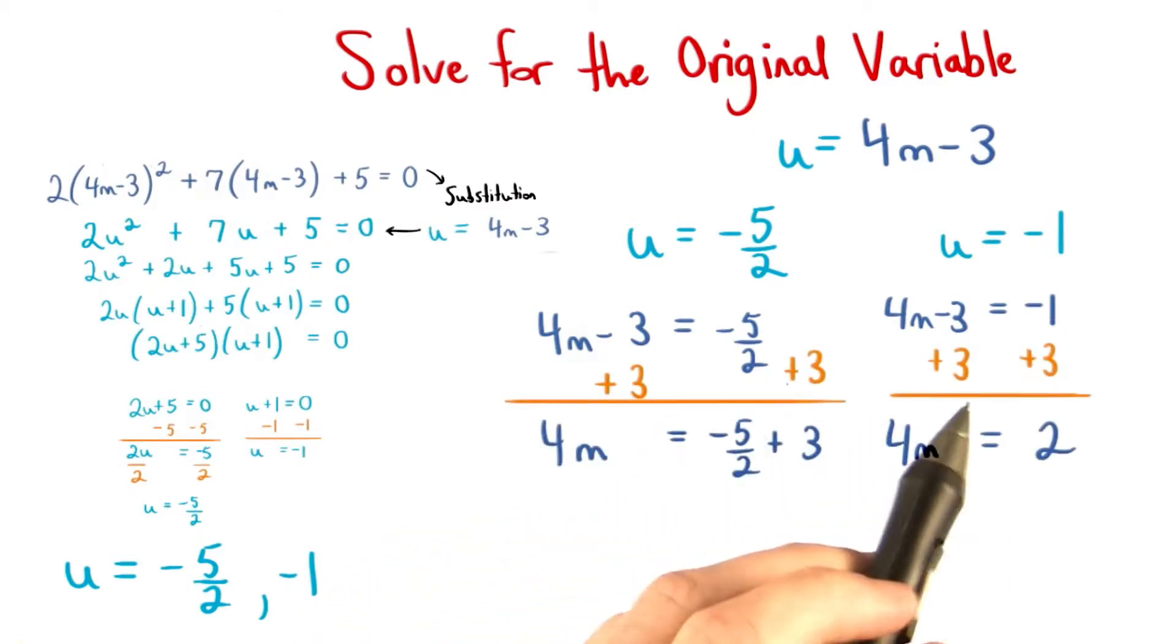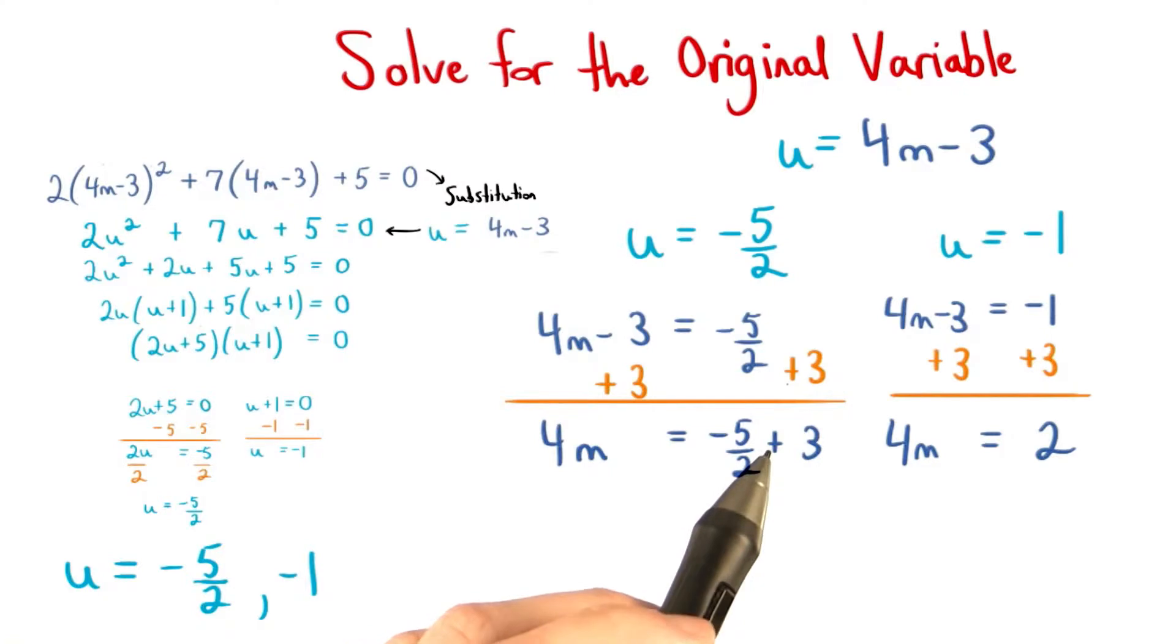Next, we add 3 to both sides of the equation to get 4m equals negative 5 halves plus 3, and 4m equals 2.